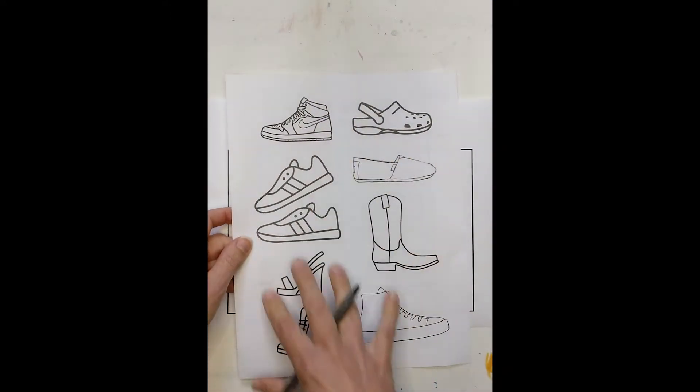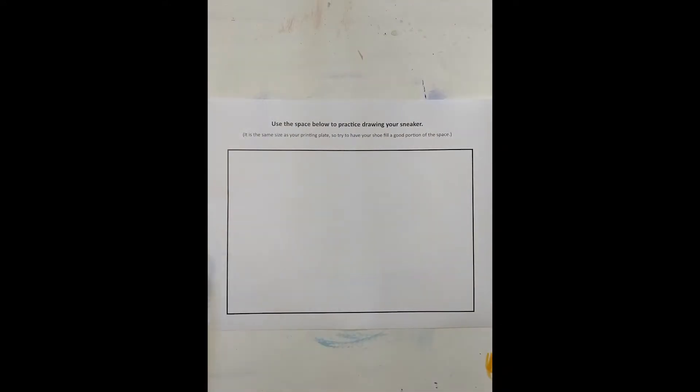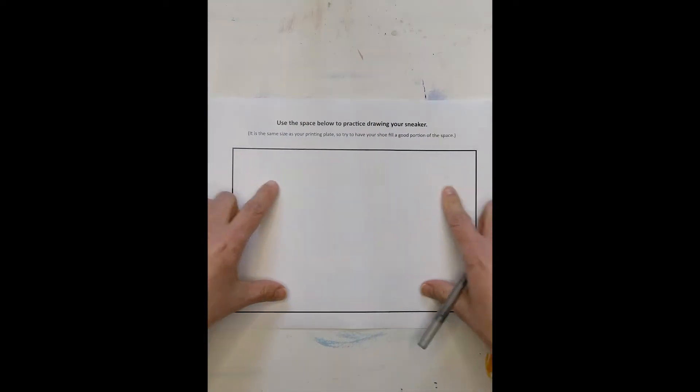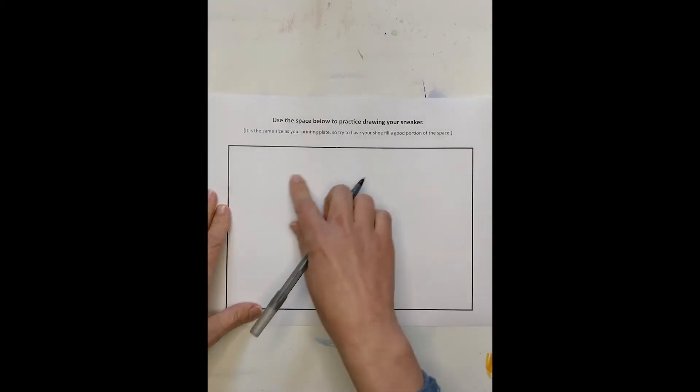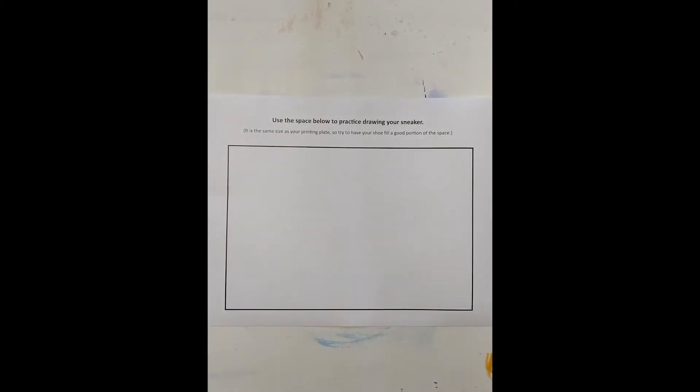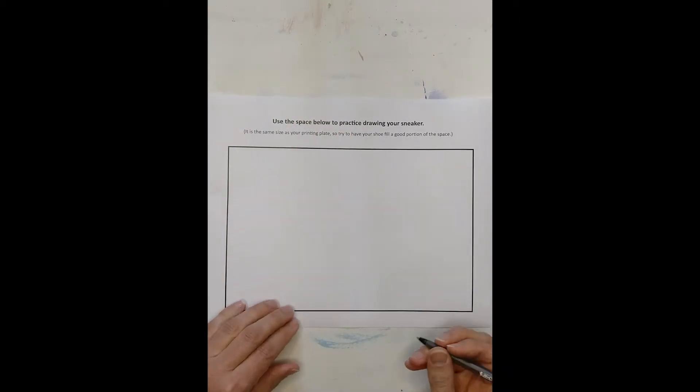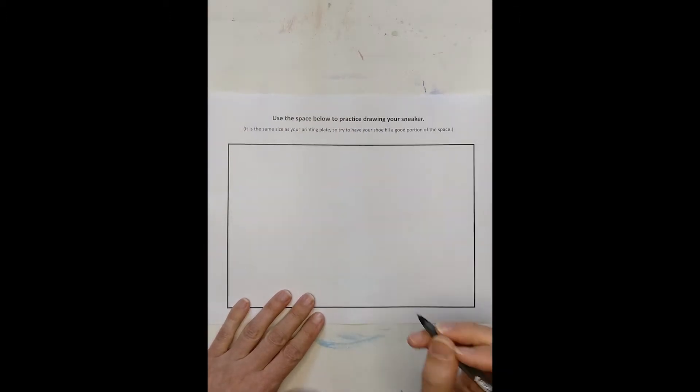But of course, you can pick any single thing you like. You can even just take the shoe off your foot and stick it on your desk and draw that one if you like. But our printing plate is basically about the same size as this box on this piece of paper. So this helps you understand the space you're going to be working with. But I encourage you to make your shoe fairly large to fill the space.